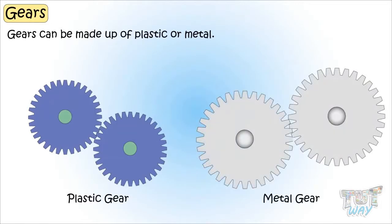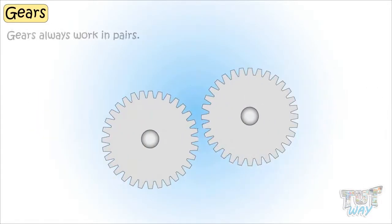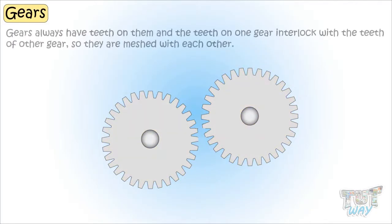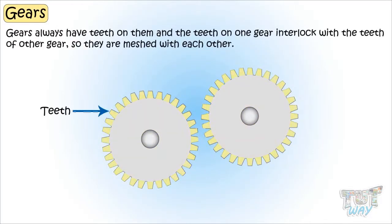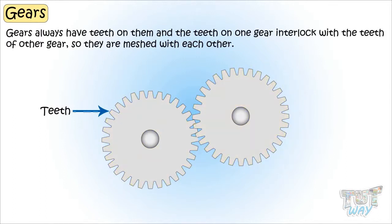Gears always work in pairs. Gears always have teeth on them, and the teeth of one gear interlock with the teeth of the other gear, so they are called meshed with each other.